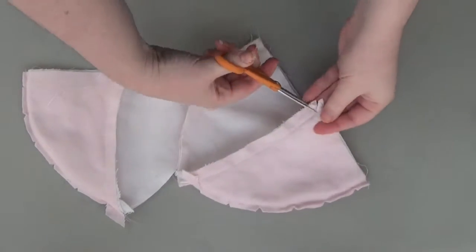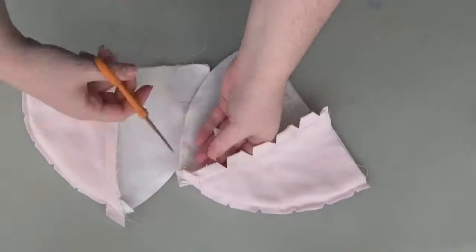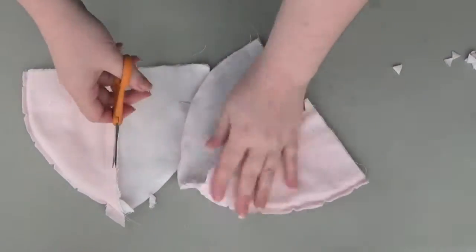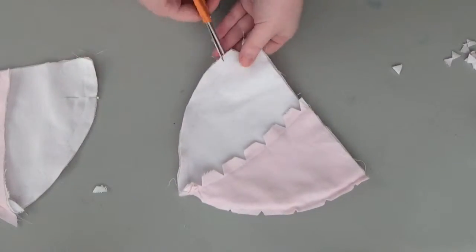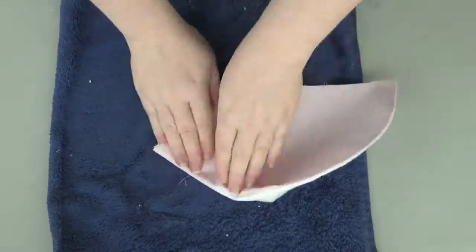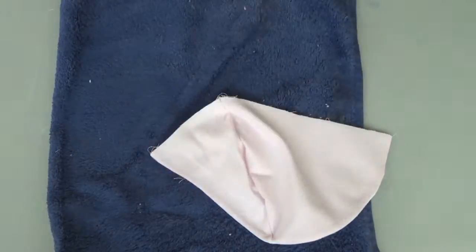Once you've done that to both ears, go ahead and cut relief cuts on that long seam the same way you did on that shorter seam. Make sure you cut the triangles and then cut it really short. Then flip the ears right side out and iron the edges as flat as you can possibly get them.